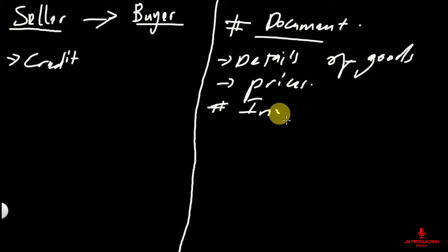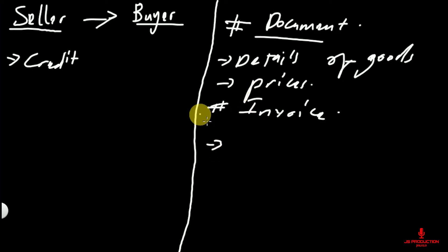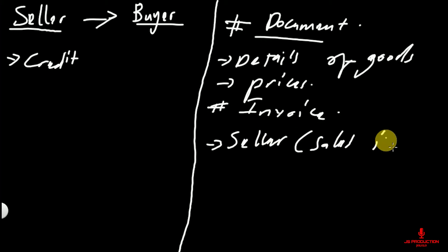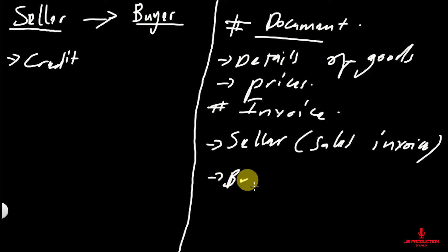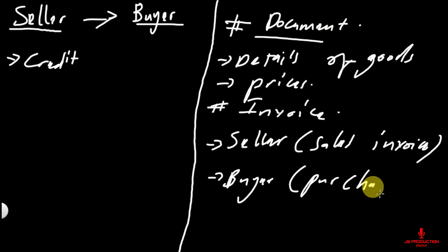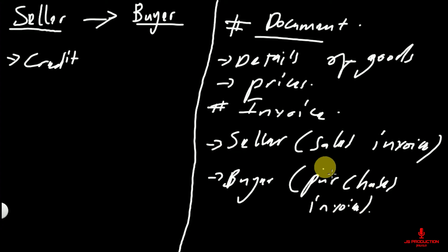You must know that this same invoice — to the seller it will be called the sales invoice, and to the buyer it will be called the purchases invoice. These two documents are the source documents for the sales day book and the purchases day book.